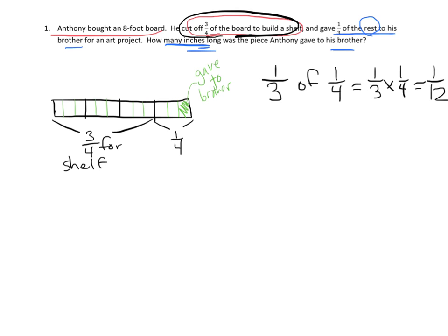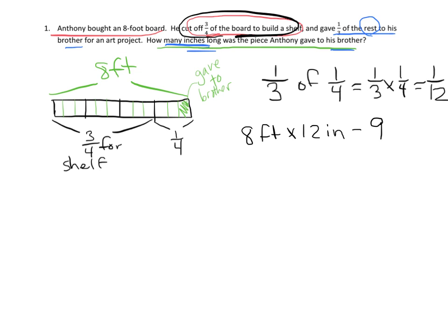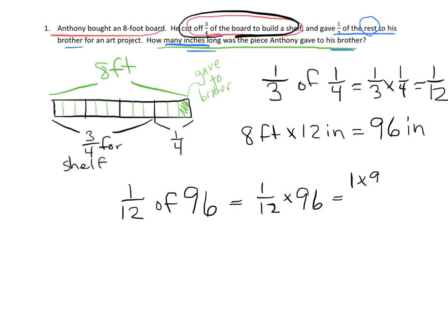We know that one-twelfth of the whole board was given to his brother, but the question asks how many inches long was the piece. We know the whole board was originally eight feet, so the first thing we need to do is convert: eight feet times 12 inches equals 96 inches, because there are 12 inches in each foot.